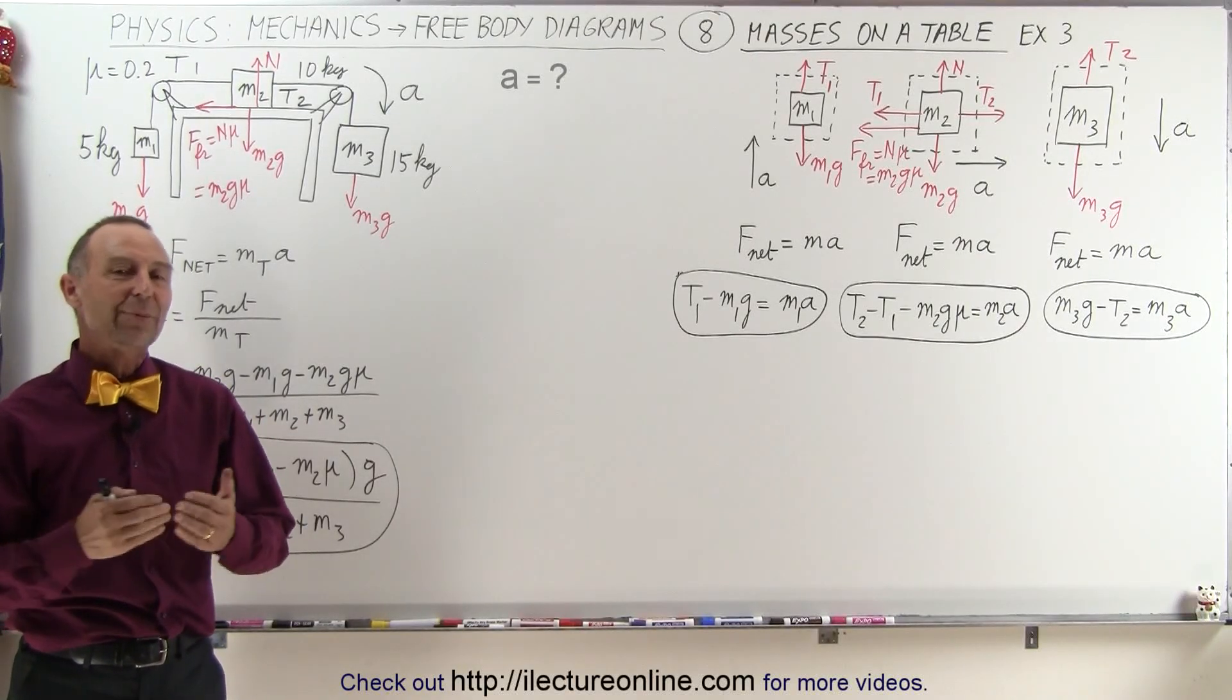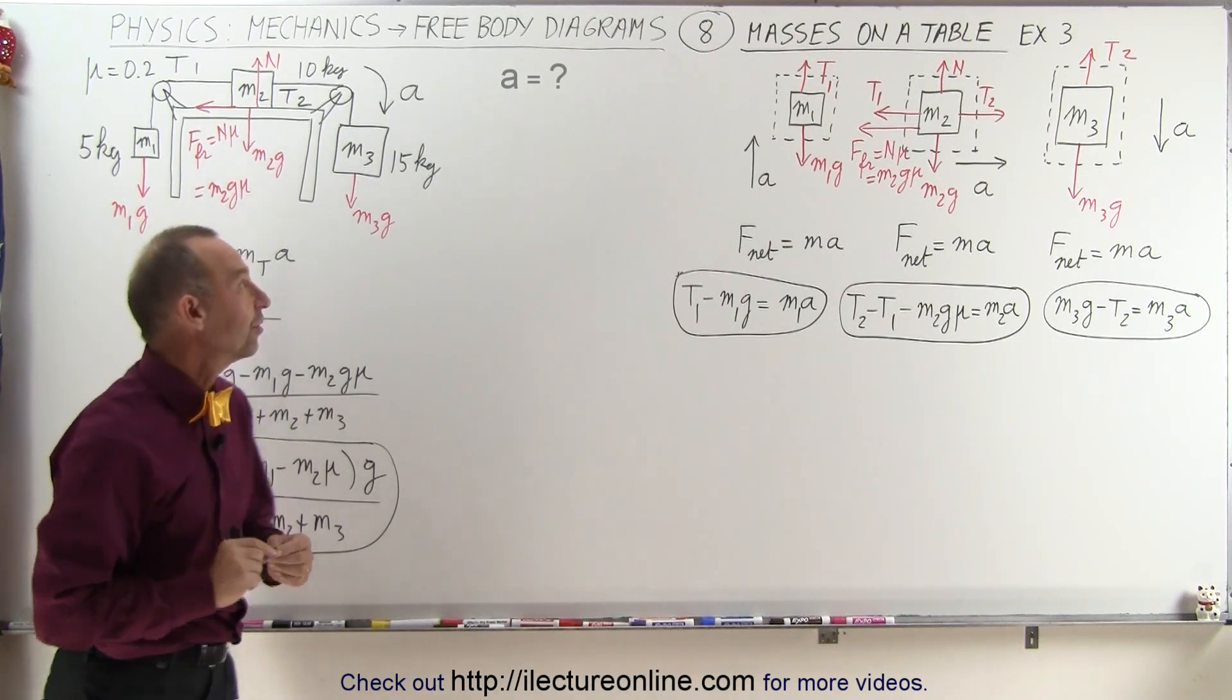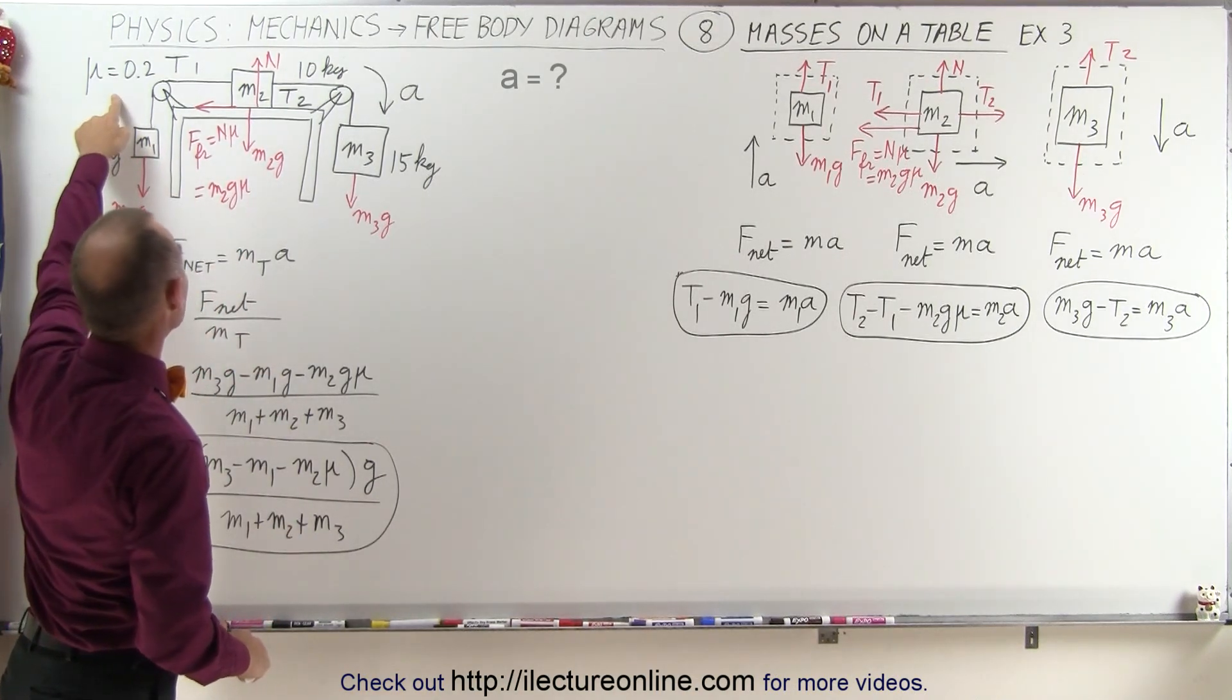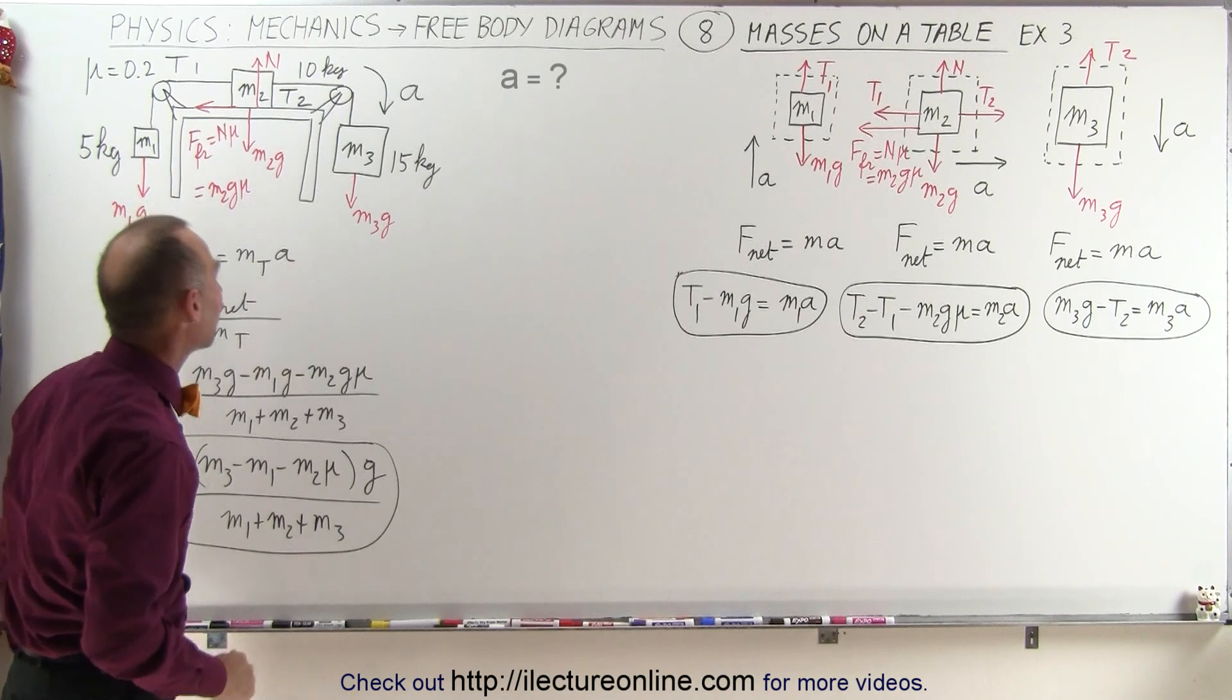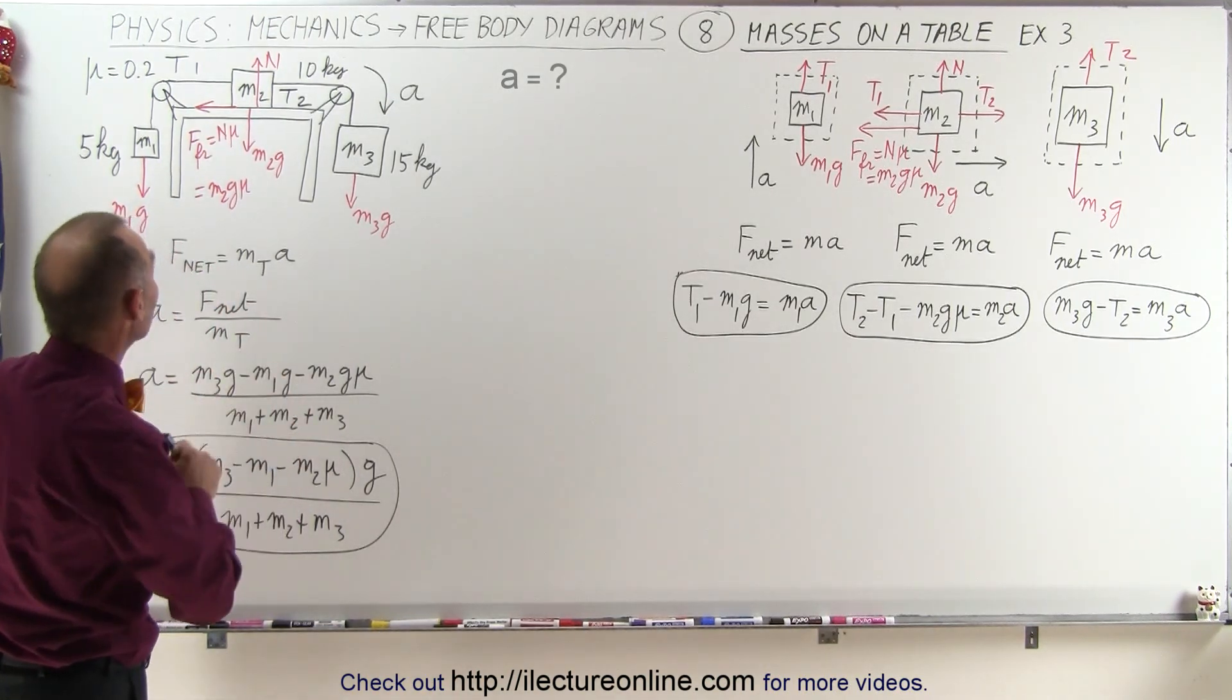Welcome to our lecture online. Here we have the very same problem that we did in the previous video with one difference: now there's friction between M2 and the tabletop. So how does that change things when we look at the whole system at once?